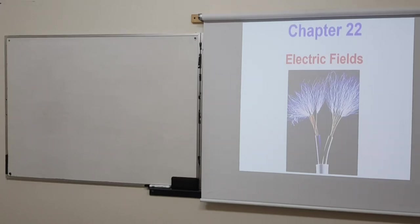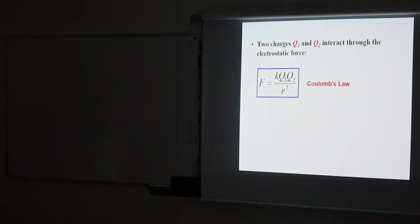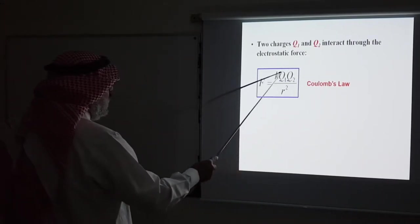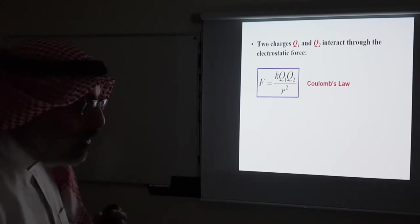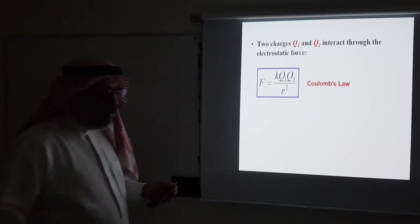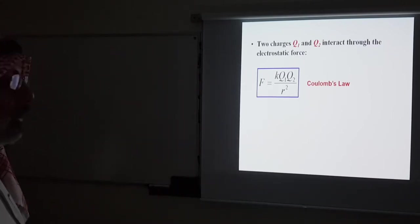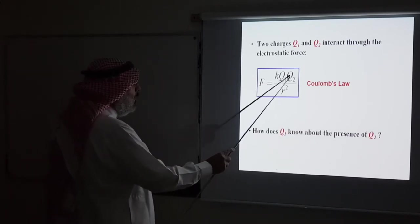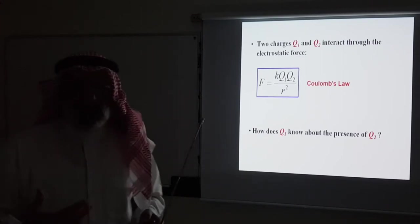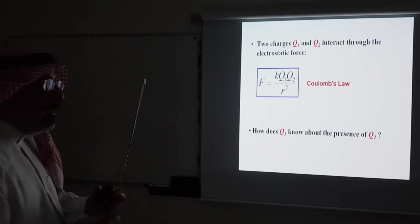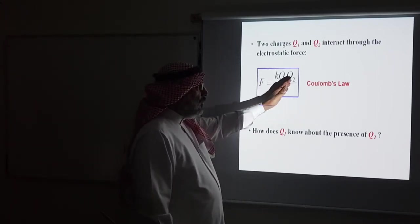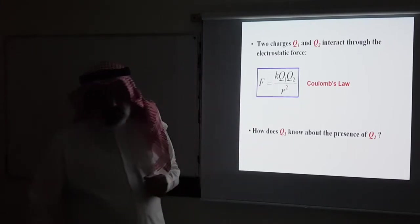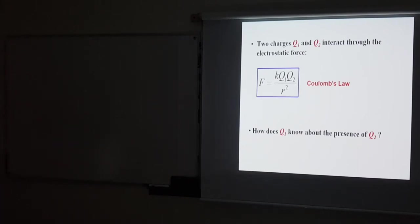Today we start with our second chapter on electricity, chapter 22, which is about the concept of the electric field. In the last chapter, chapter 21, we saw that the electrostatic force between two point charges is given by Coulomb's law — proportional to the magnitudes of the charges and inversely proportional to the square of the distance between them. A peculiar question: how does Q1 know about the presence of Q2 in order to interact with it?